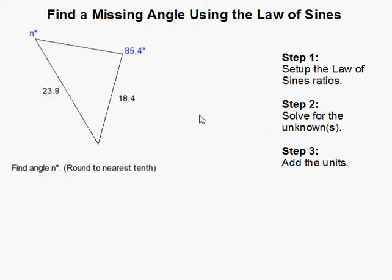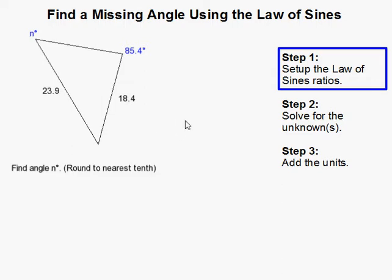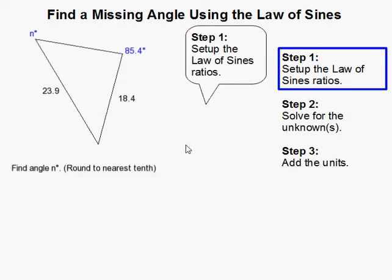How to find a missing angle using the Law of Sines. The first thing you need to do is set up the general Law of Sines ratios, or know them.